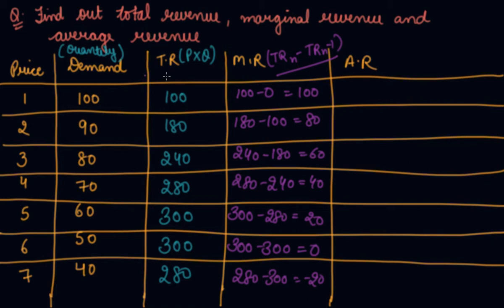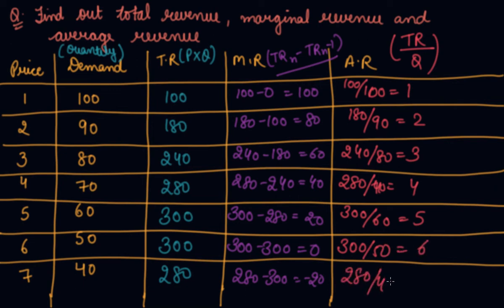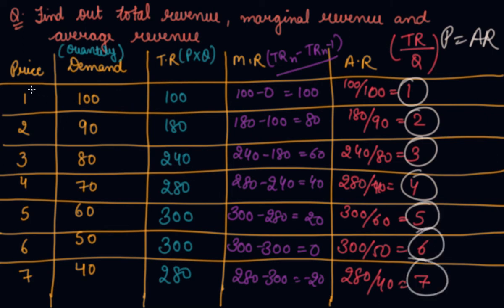Now we calculate average revenue, which is total revenue divided by quantity. For each unit: 100 divided by 100, 180 divided by 90, 240 divided by 80, 280 divided by 70, 300 divided by 60, 300 divided by 50, and 280 divided by 40 — giving AR values equal to the respective prices. This proves that average revenue equals price, as we discussed in this chapter.